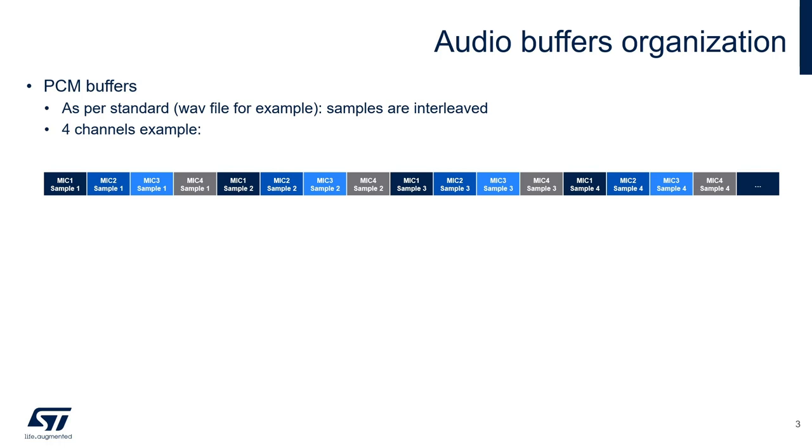Let's start from a quick introduction on how audio data is organized when dealing with more than a single channel. Standard PCM buffers contain interleaved channels. In the four channels example you see, the first four values represent the first sample of each one of the four channels. The second four values are the second sample of each channel, and so on.